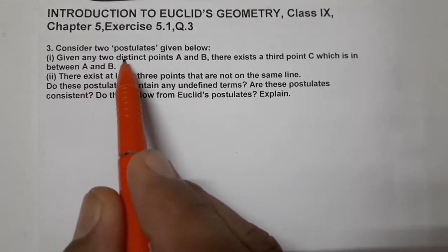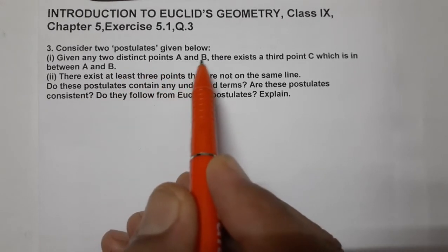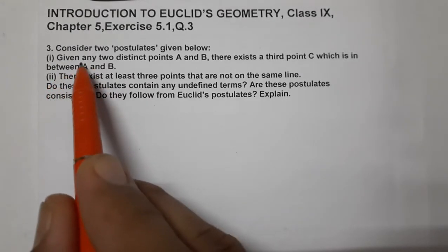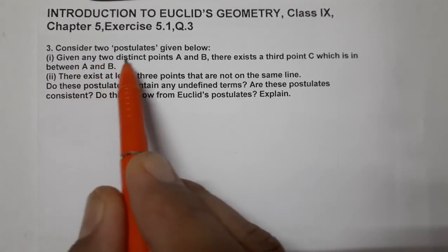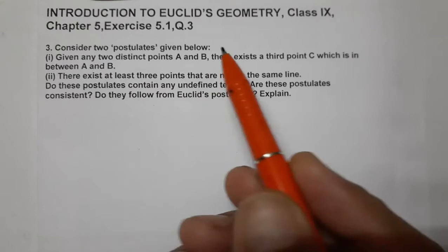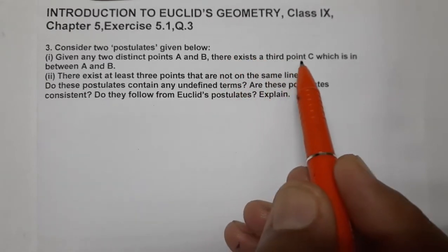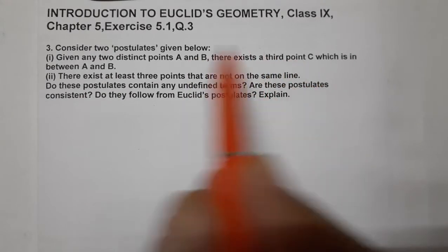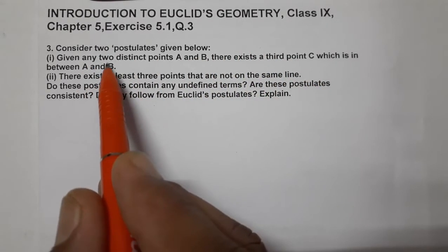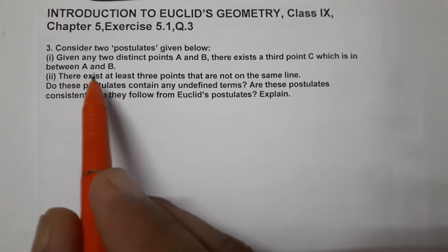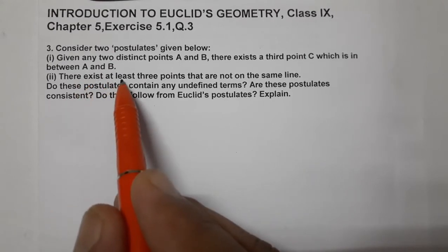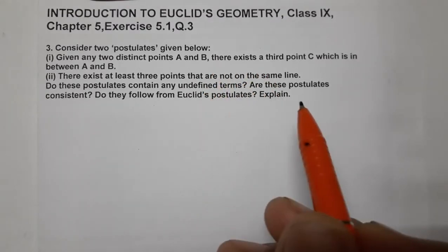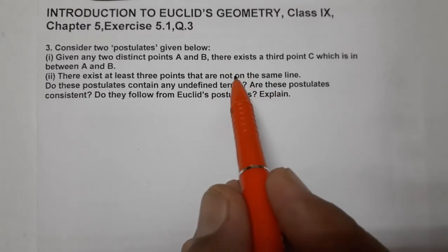Given any two distinct points A and B — this is the first postulate — there exists a third point C which is in between A and B. The second postulate: there exist at least three points that are not on the same line — three points that are not on the same line.